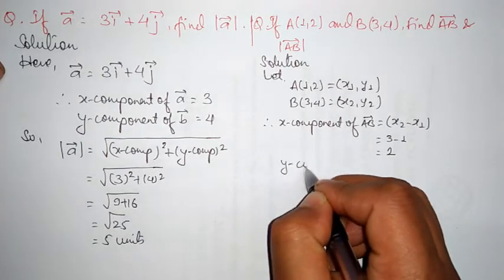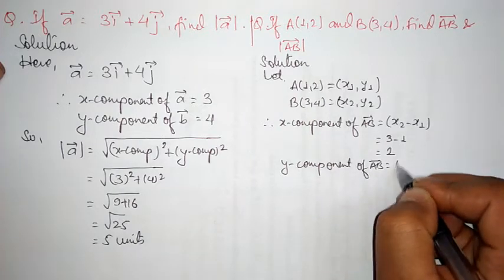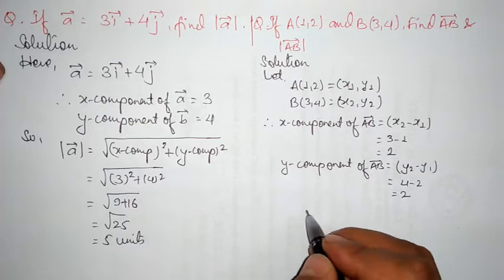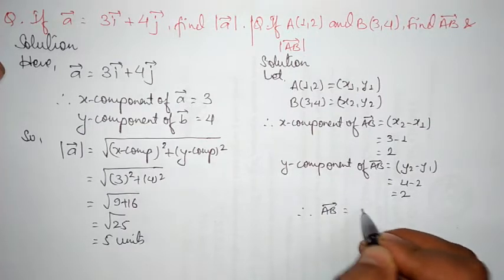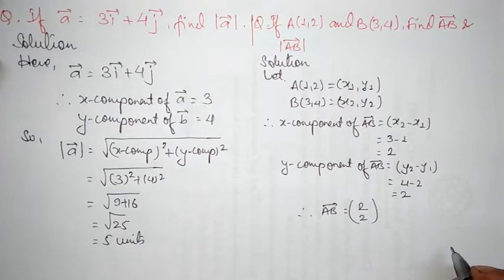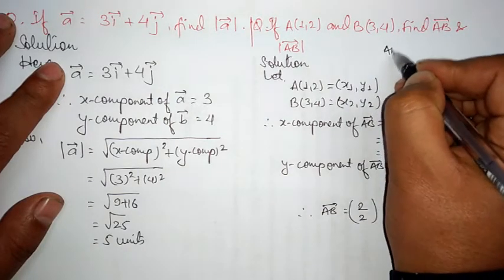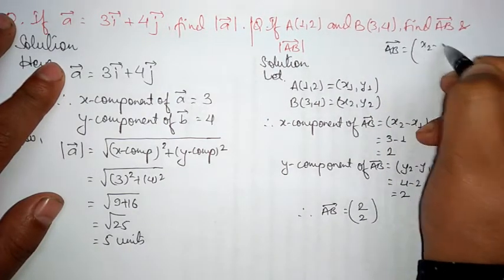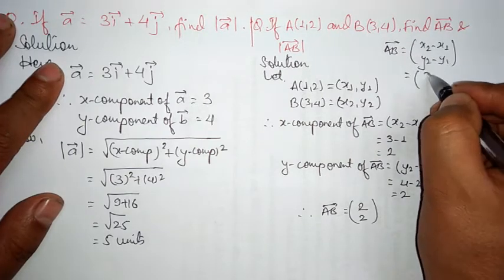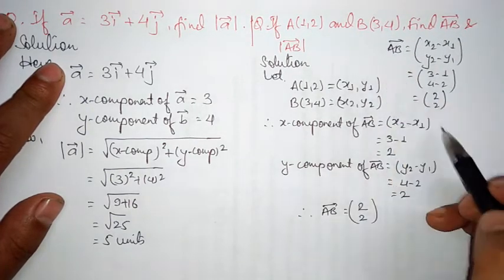Similarly, the y component of vector AB equals y2 minus y1, that is 4 minus 2, which equals 2. Therefore, vector AB equals (2, 2). If you want to find vector AB directly, use the formula: AB = (x2 minus x1, y2 minus y1) = (3 minus 1, 4 minus 2) = (2, 2). You can use this method also.